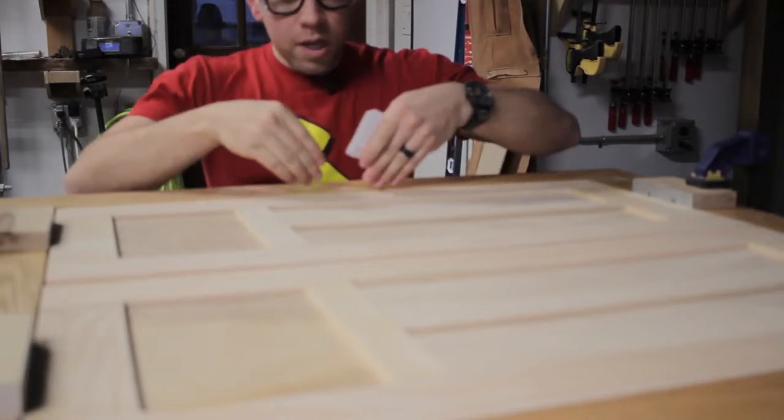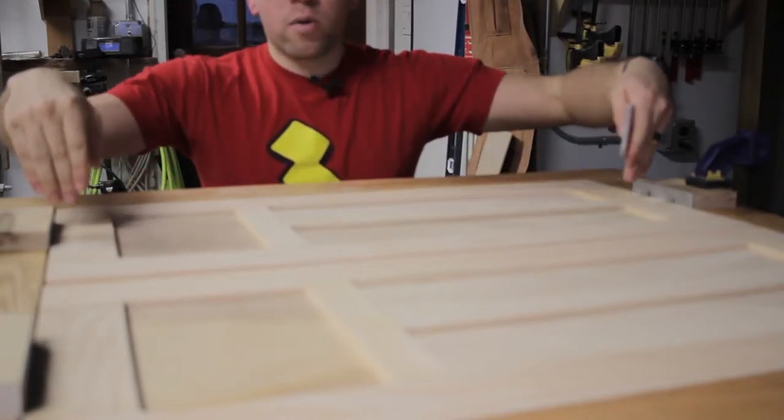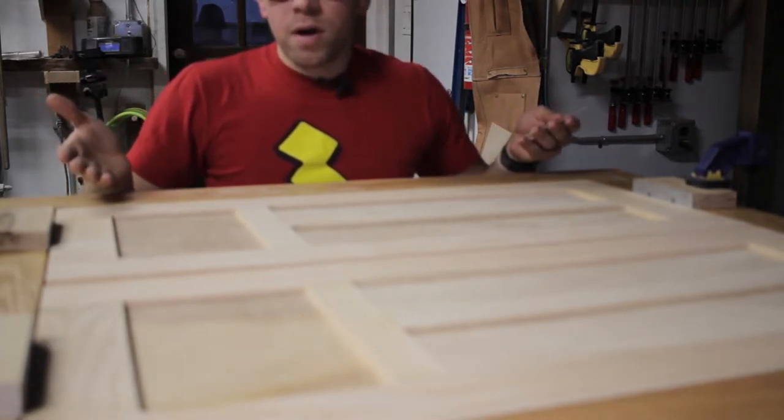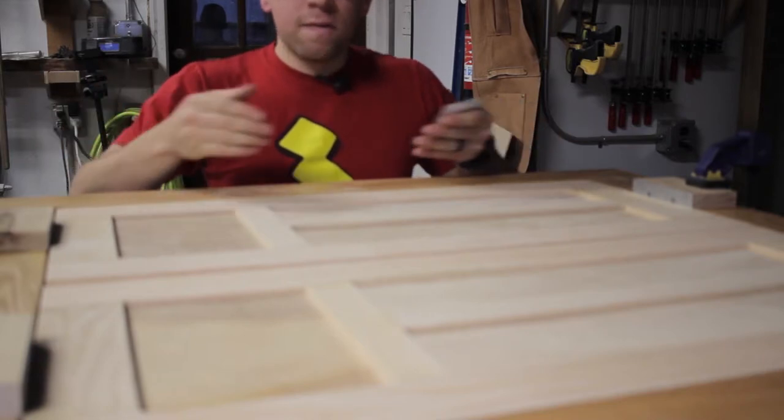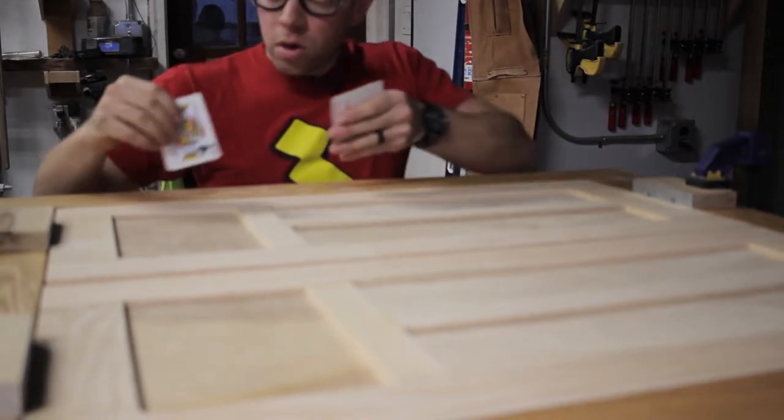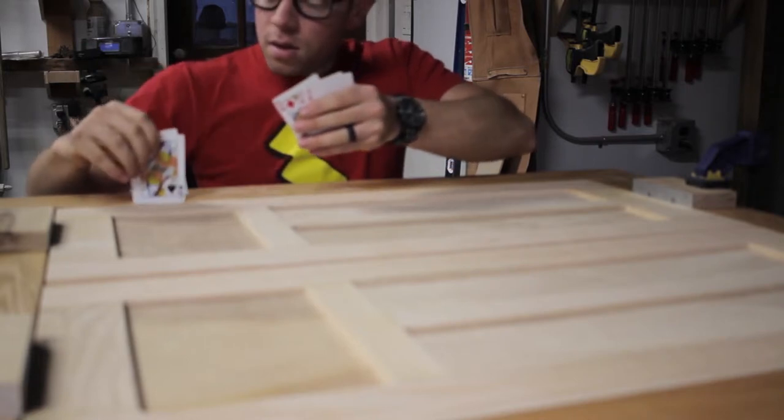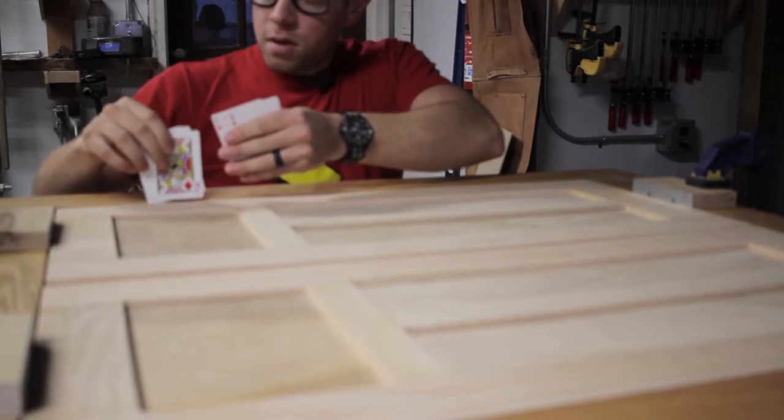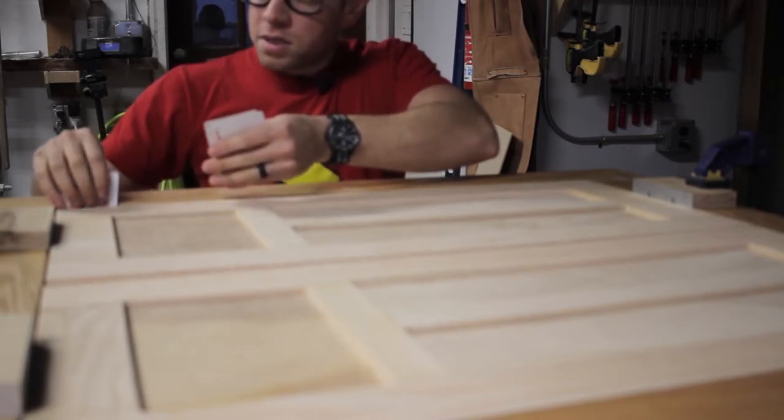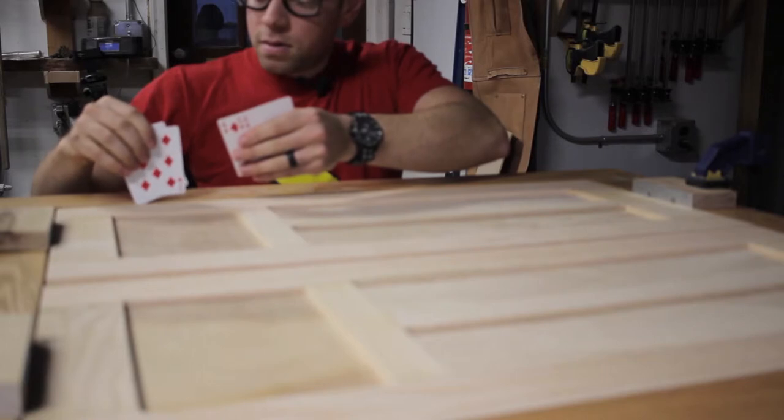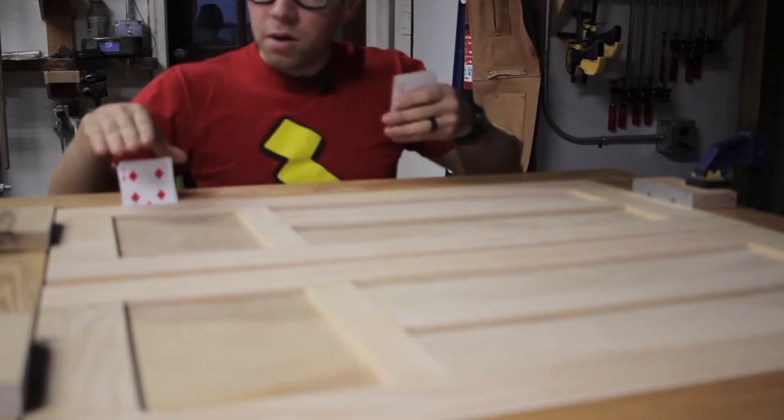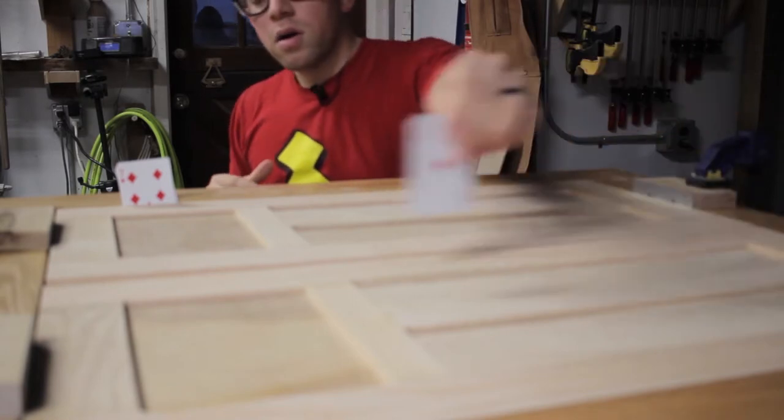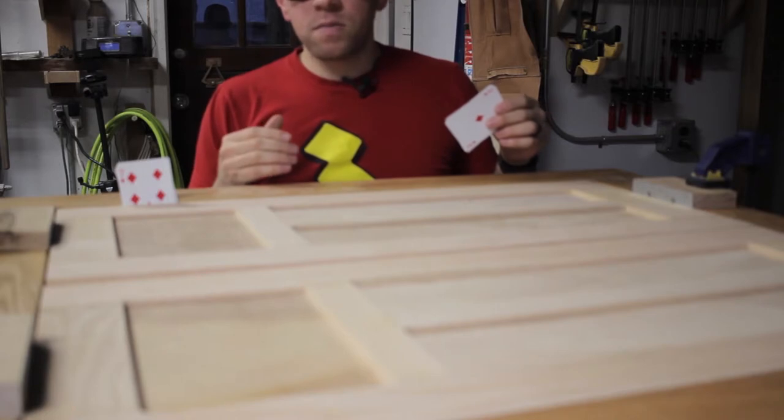So the idea here is to get an even reveal all the way around, and depending on what hardware you use it might vary anywhere from a heavy sixteenth to over an eighth of an inch. But the goal is you take your cards and you can use them as shims until you have the desired distance, and now you know exactly how many cards that takes. You can repeat it on the other side and go along all four edges until you have an even consistent reveal.